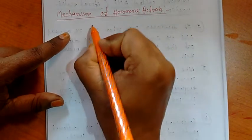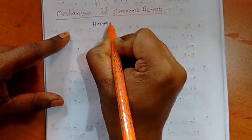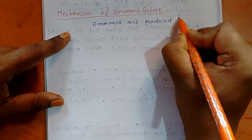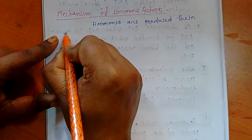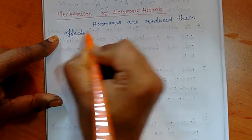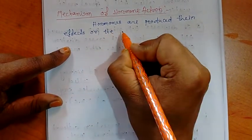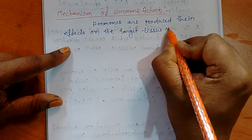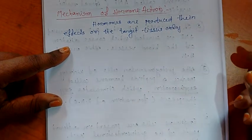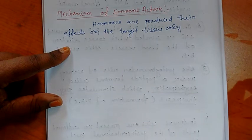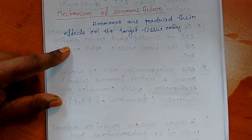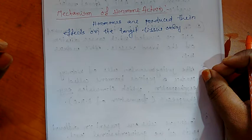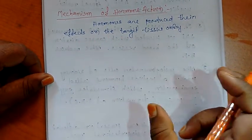Mechanism of hormone action. Hormones are produced and have their effects on the target tissue only. We know that hormones directly mix with the blood and act only on target tissue during the time of need. Otherwise, inhibition of hormone secretion occurs. That is the feedback mechanism.